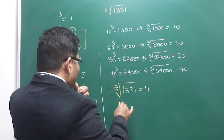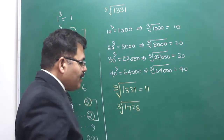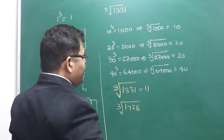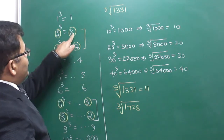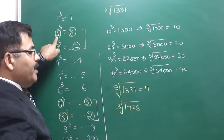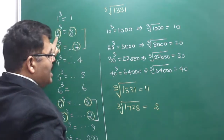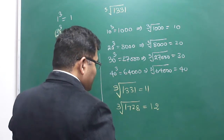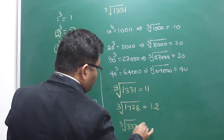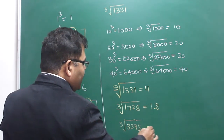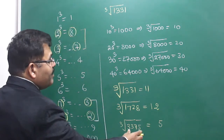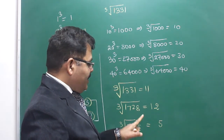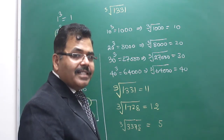Similarly, suppose you have to find the cube root of 1728. This number is also more than 1000 and less than 8000, so the answer lies between 10 and 20. The digit 8 at the unit place ensures that the cube root must have 2 at its unit place. The number between 10 and 20 with unit place 2 is 12. So the answer is 12. Another example: 3375. The digit 5 will ensure that the unit place must be 5, and this number lies between 1000 and 8000, so the answer lies between 10 and 20. The number with unit place 5 is 15.